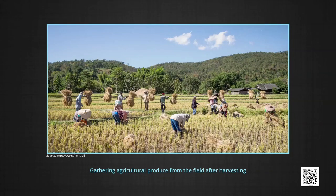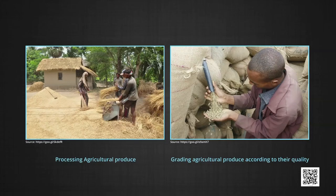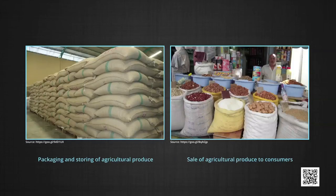Agricultural marketing is not simply the sale of agricultural produce, but it also involves gathering the produce after harvesting, processing the produce, grading them according to their quality, packaging according to buyer's preferences, storing for future sale, and selling them when they get better prices. So, it is a total process.